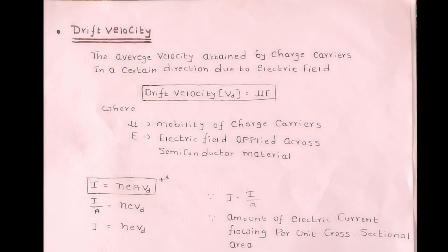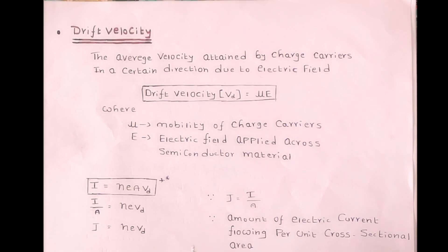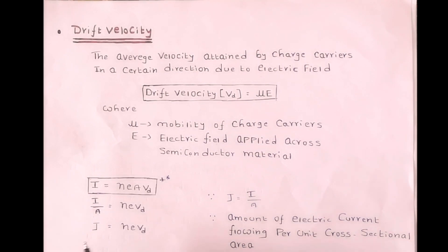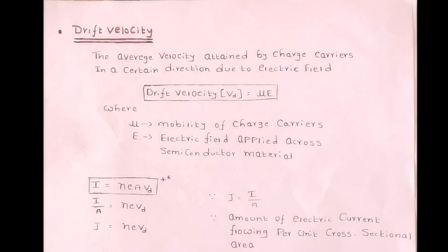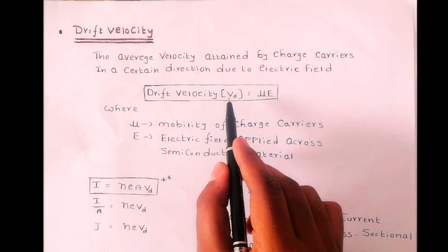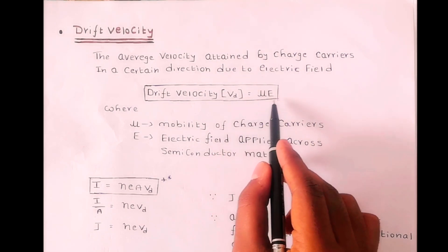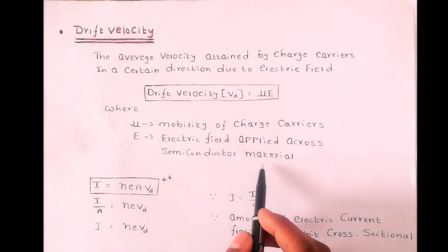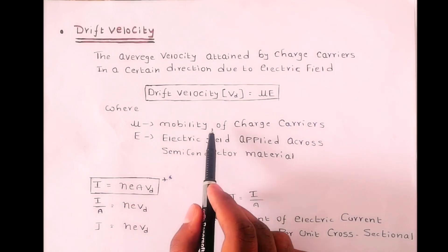Now let's see what is drift velocity. In a semiconductor material, electrons move in random directions. When these electrons are subjected to an electric field, their random motion will be converted into a particular motion, and they slowly drift in one direction — in the direction of the electric field. The net velocity at which these electrons drift is known as drift velocity, denoted as Vd. It is given by the expression Vd = μE, where E is the electric field applied across the semiconductor device and μ is the mobility of charge carriers.